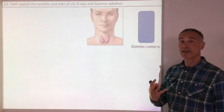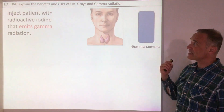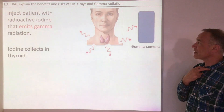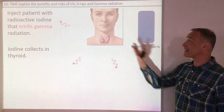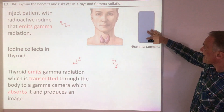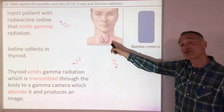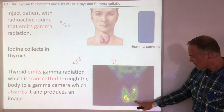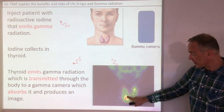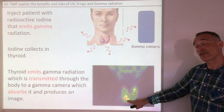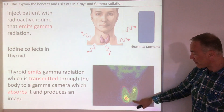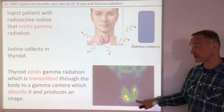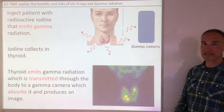The thyroid absorbs iodine, so an isotope of iodine is injected into the body which gives off gamma radiation. That collects in the thyroid over a few hours and the thyroid starts to give out gamma radiation, which is detected by a gamma camera because the gamma rays can be transmitted through your body and out to the camera. A functioning thyroid gives off a lot of gamma radiation showing it has absorbed the iodine, whereas a poorly functioning thyroid gives off less because it hasn't absorbed as much iodine. So gamma rays are used to image things within the body.